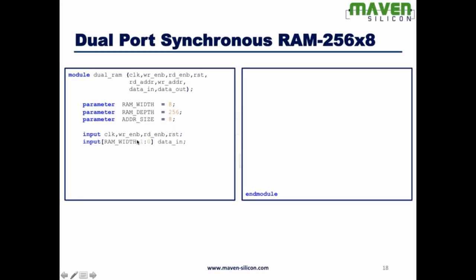So width is 8, depth is 256, address size is 8, and these are all the inputs. When it comes to data in, I have to use the parameter, so RAM_width minus 1 down to 0. This is how you can define the width.